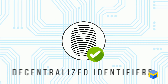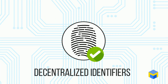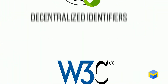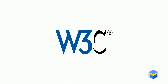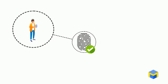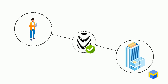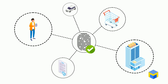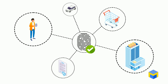Decentralized Identifiers are a new type of identifier that enables verifiable decentralized digital identity. According to W3C, a DID refers to any subject such as a person, organization, thing, data model, abstract entity, etc., as determined by the controller of the DID.